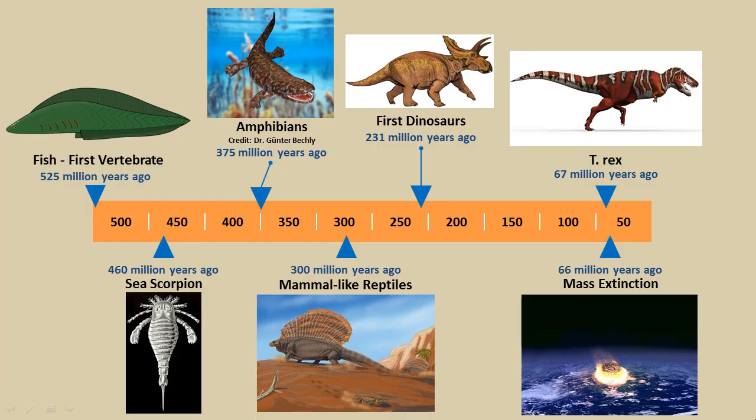Let's take a look at another timeline. 525 million years ago, the first vertebrates appear — these would have been very small fish, and you probably wouldn't have taken much notice of them, because the sea at this point was still dominated by invertebrates, like that sea scorpion that appears around 460 million years ago. Sea scorpions, which we'll talk about in the next video, were related to spiders.